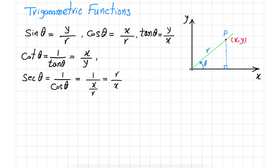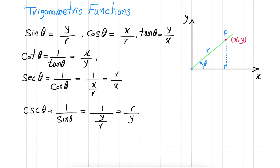This is secant of theta. And the cosecant of theta is the inverse of sine of theta, which is 1 over (Y/R), leading to R over Y. So you see that the concept of right-angle trigonometry can be applied to a 2D Cartesian system.